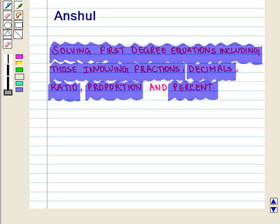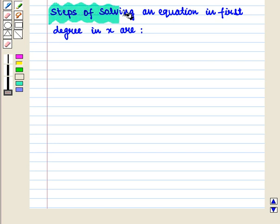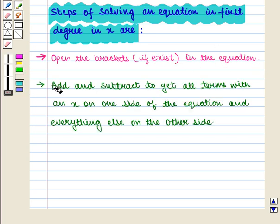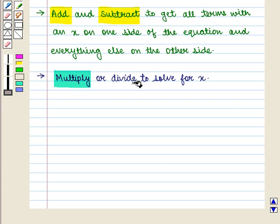Now we are already familiar with method of solving a first degree equation. Steps of solving an equation in first degree in x are as follows. First of all we shall open the brackets if exist in the equation. Then we add and subtract to get all terms with an x on one side of the equation and everything else on the other side. Then we multiply or divide to solve for x.